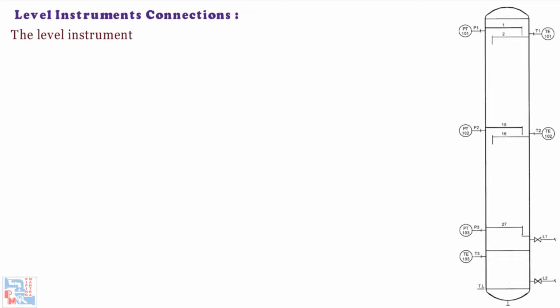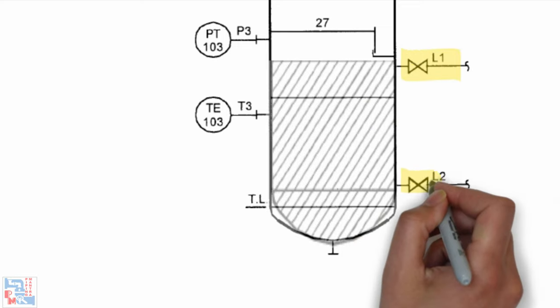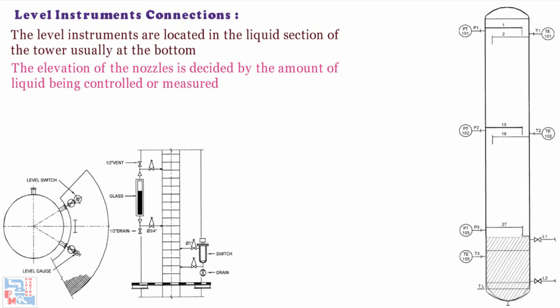Now comes level instrument connection. The level instruments are located in the liquid section of the tower usually at the bottom. The elevation of the nozzles is decided by the amount of liquid being controlled or measured and by standard controller and gauge glass lens.